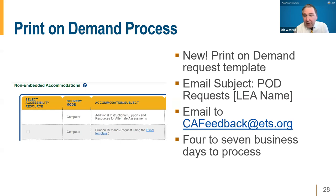Print on demand has changed to be more streamlined. Reach out to your success agents to request this support. There is a template you need to complete so they have the information required to process the request, which needs non-embedded accommodations indicated. Email the file with the subject 'POD Print on Demand Request' to cafeedback@ets.org. Allow two business days during the off-testing season for the test setting to be applied. During peak months (March through May), it may be four to seven business days depending on file size and volume.